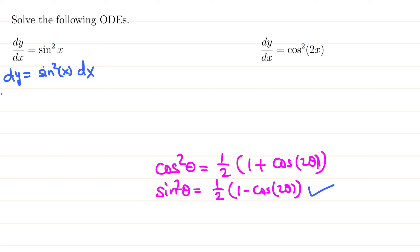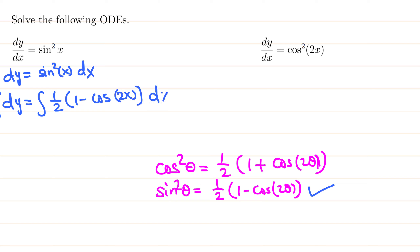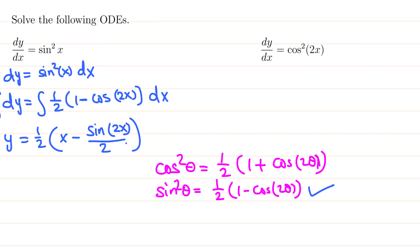Integrating both sides and applying the power-reducing formula: y equals the integral of one half (1 minus cosine 2x) dx. Pulling the one half to the front: one half times the anti-derivative of 1, which is x, minus the anti-derivative of cosine 2x, which is sine 2x divided by 2. So y equals one half (x minus sine 2x over 2) plus c. That's the final answer.